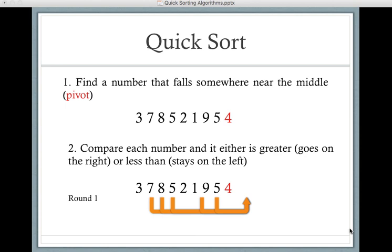So then what we do is compare each number to our pivot, and it's either going to be greater than that or less than that. If it's greater than, we move it to the right. If it's less than, it stays on the left. So for round 1, you can see 7, 8, 9, and 5 will be moved over to the right. And 3, 2, and 1 will stay on the left.